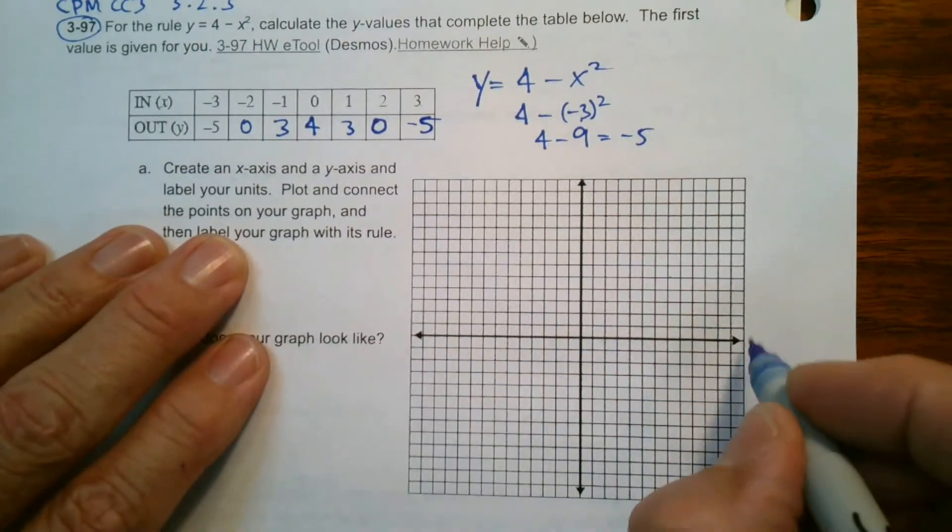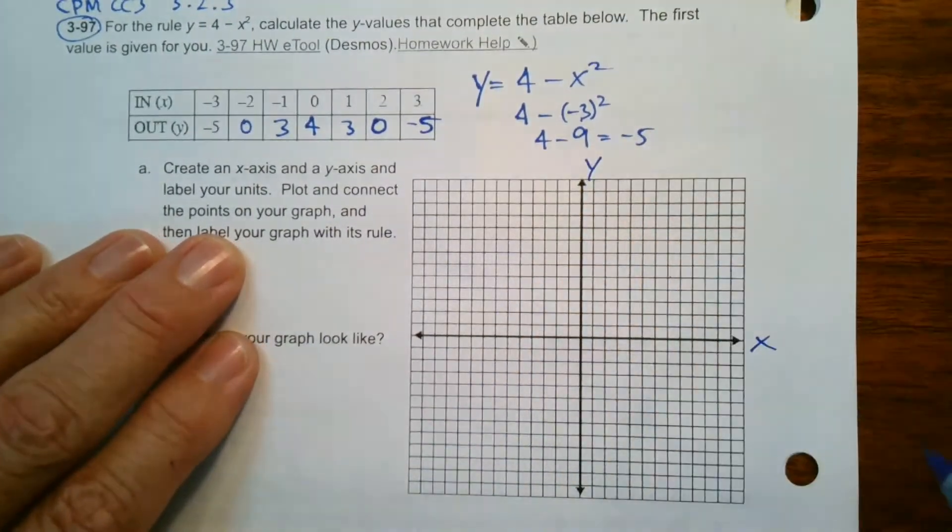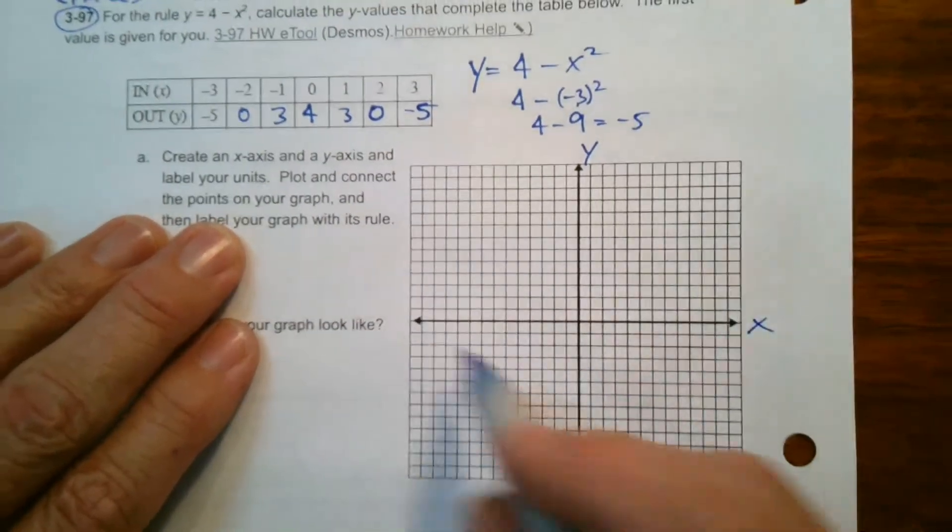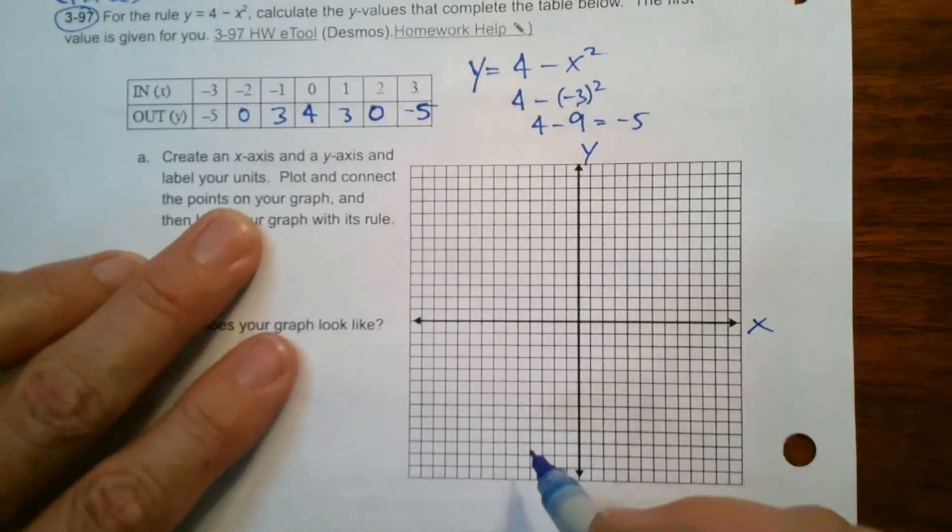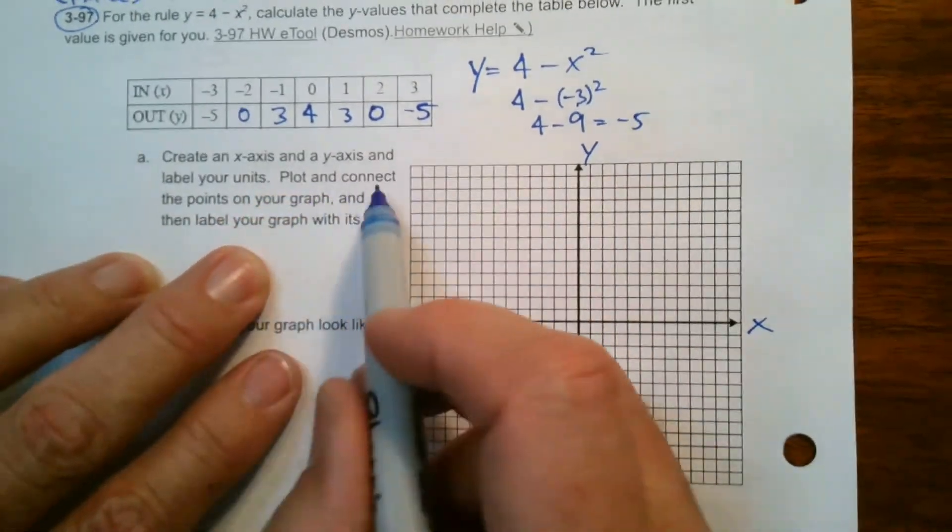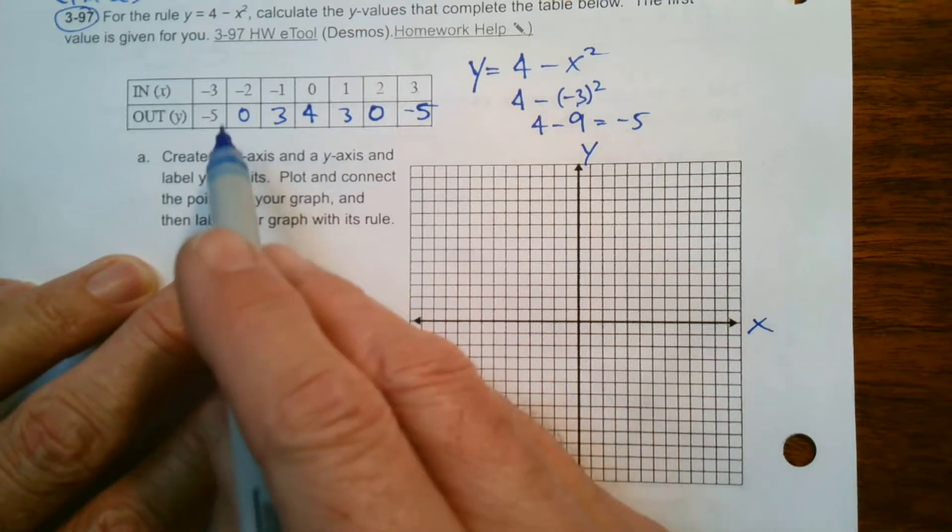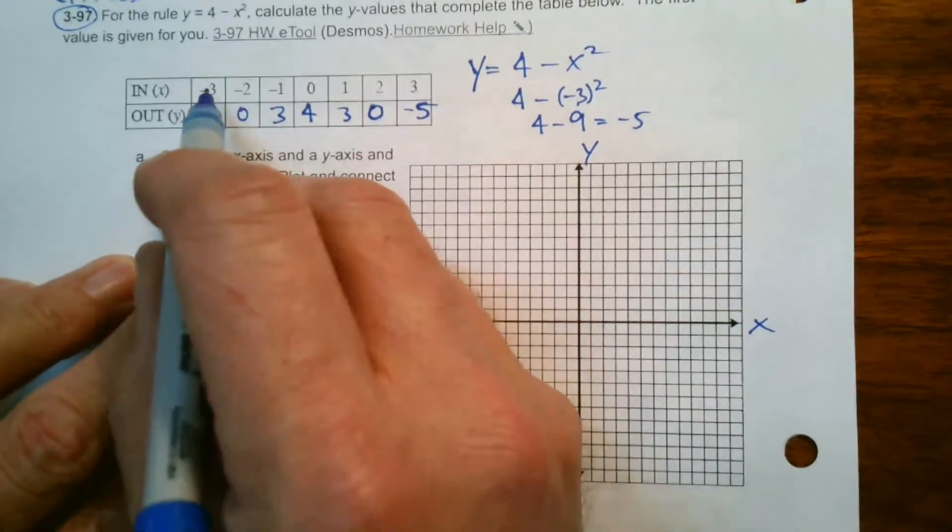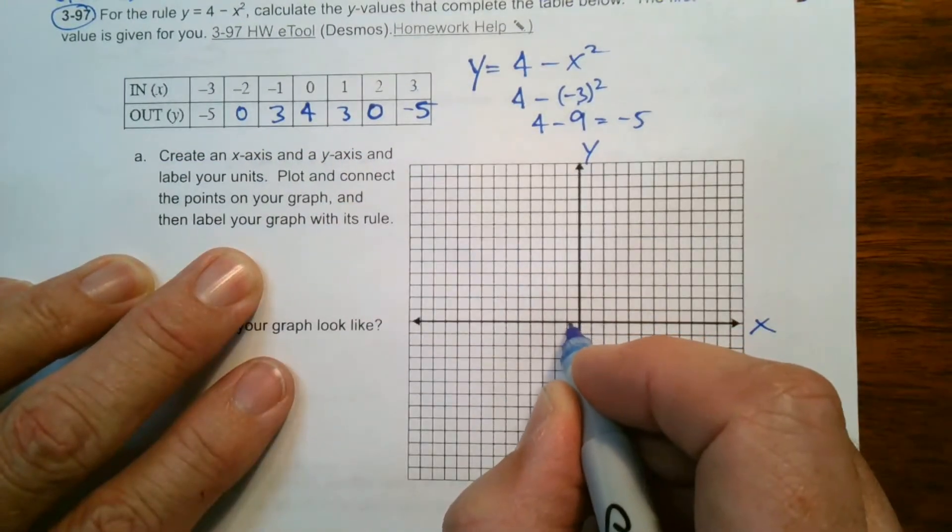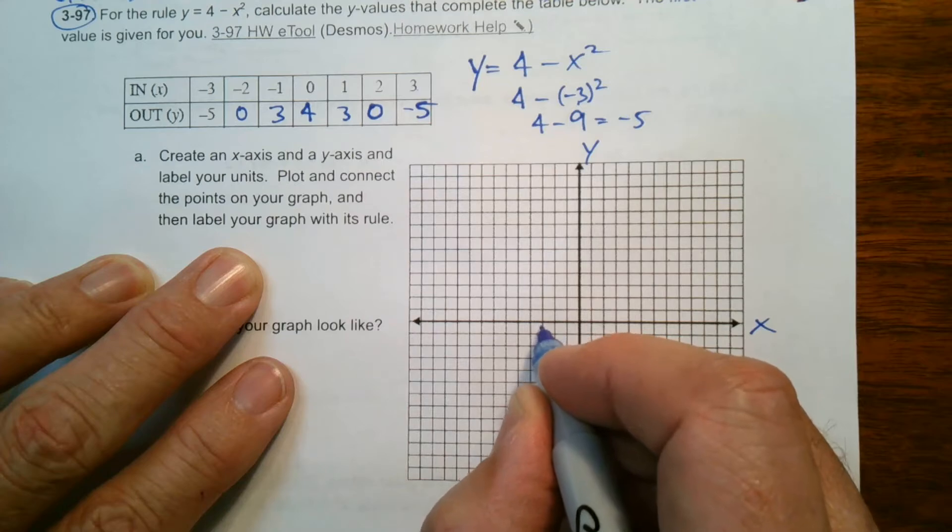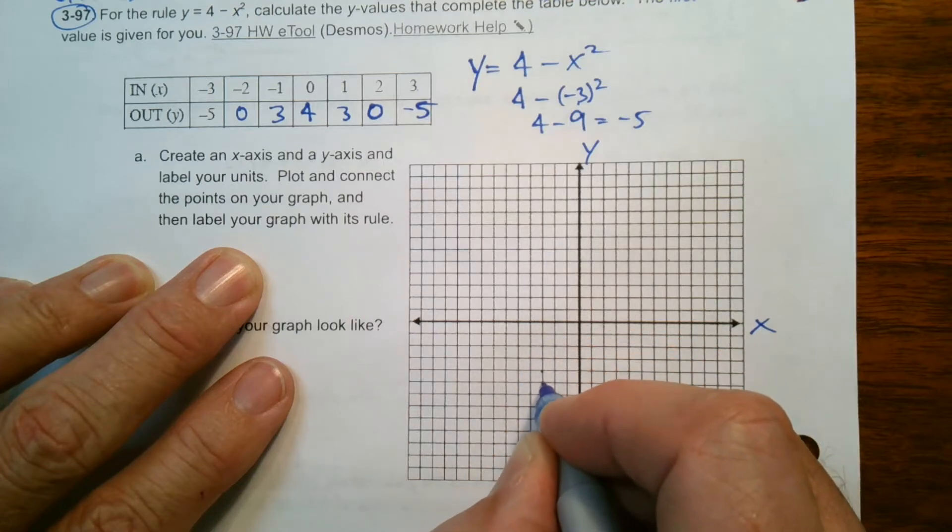So here's my X and Y axes. I've got my axes already on my graph paper. So you would actually create an X and Y axes if you're using your own piece of graph paper. And then plot and connect the dots on your graph. So let's plot these. So this is negative three, negative five. So negative one, two, three, negative one, two, three, four, five. So that's there.